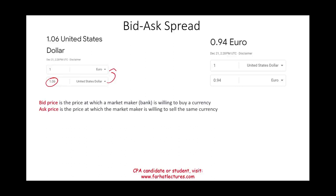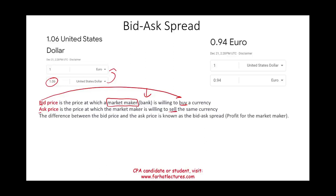When dealing with foreign currencies, you must be aware of the bid and ask price. The bid price is the price at which the market maker — let's call it the bank — is willing to buy the currency. Remember: bid = buy. The ask price is the price at which the market maker is willing to sell the same currency. The difference between the bid and the ask price is known as the spread, which represents the profit for the market maker.